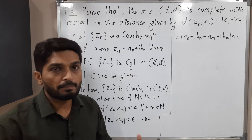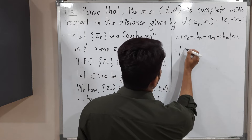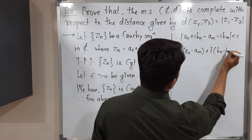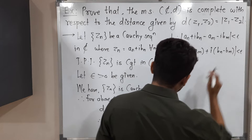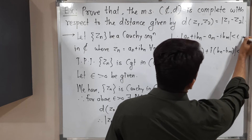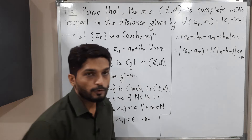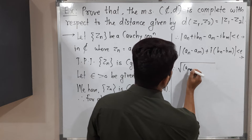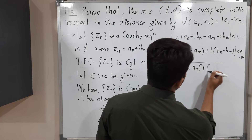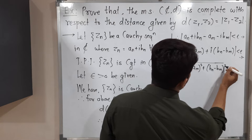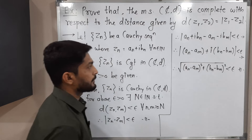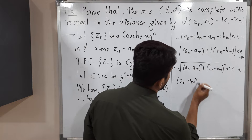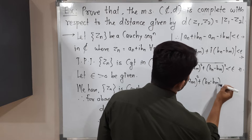Subtracting real part from real part and imaginary part from imaginary part, we get √[(aₙ - aₘ)² + (bₙ - bₘ)²] < epsilon. To remove the square root, we take the square of both sides: (aₙ - aₘ)² + (bₙ - bₘ)² < epsilon².